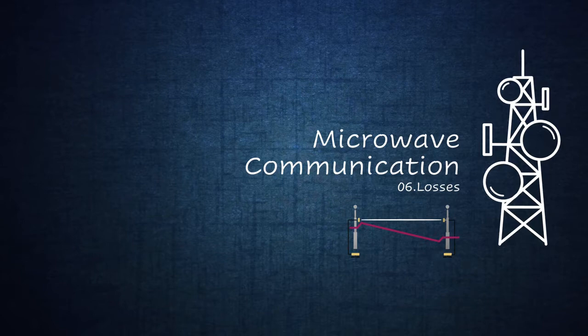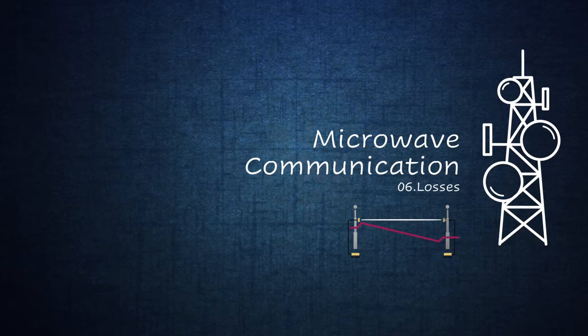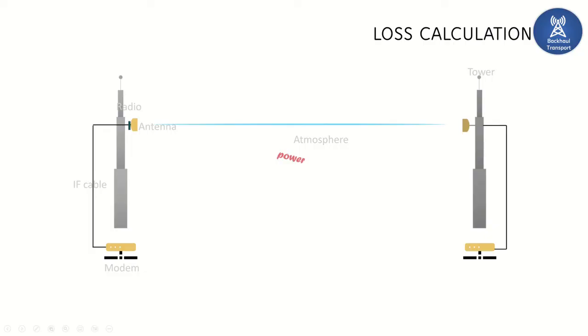Hello viewers, in this session we are going to calculate the microwave losses in microwave communication link. Let's start with calculating the receiving power level at the receiving antenna. The receiver power is calculated as a difference between the transmitted power and the path loss. How path loss works, we will see the single dimension graph here.